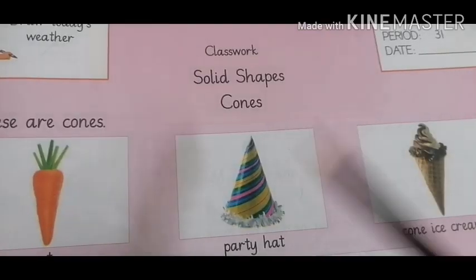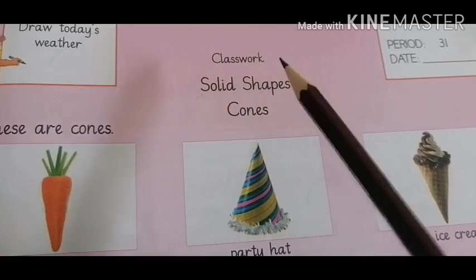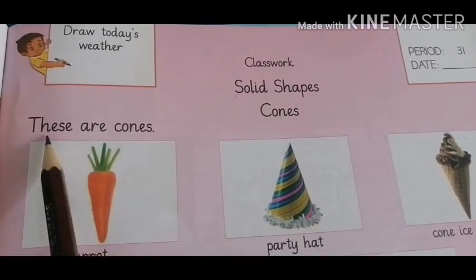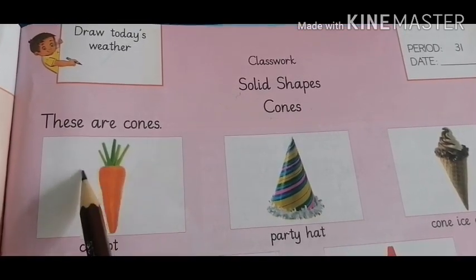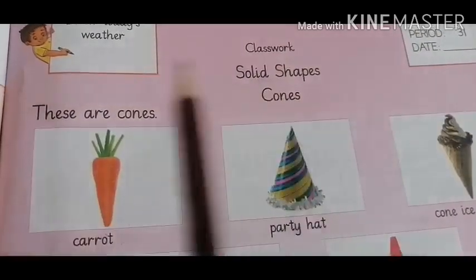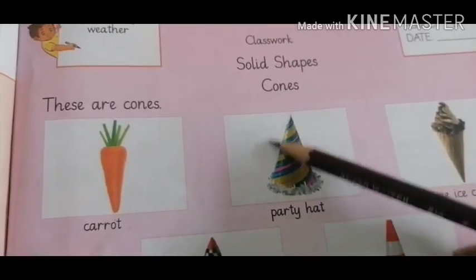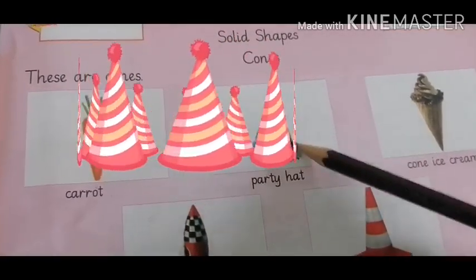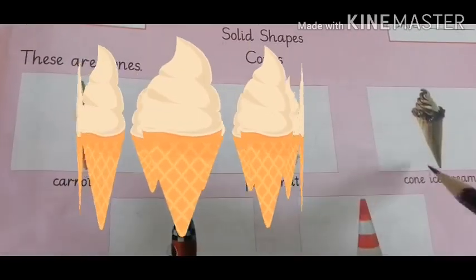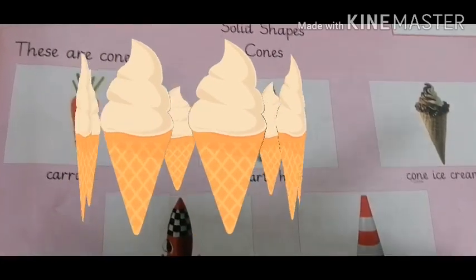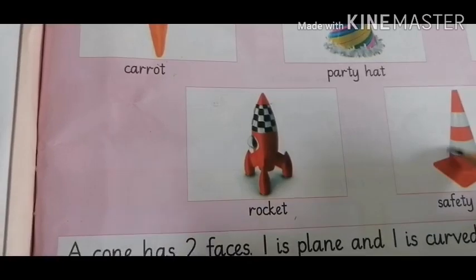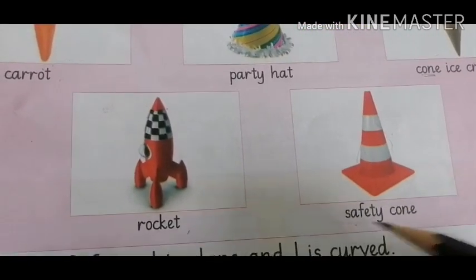Solid shapes are three-dimensional shapes — shapes of things which we see in real life. These are solid shapes. The first example of these shapes is cone. Look at the first picture: it's a carrot, and a carrot's shape is cone. Look at the next picture: it's a party hat, which also has a cone shape. Look at the next picture: it's a cone ice cream. Have you ever observed the shape of cone ice cream? Yes, its shape is cone. Look at the next picture: it's a rocket, also in cone shape. Next picture is of a safety cone — you can see these on roads.